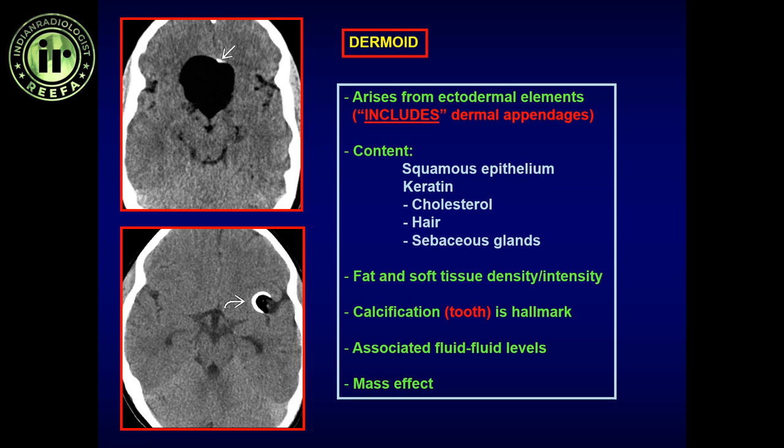Dermal appendages in dermoid include sebaceous and sweat glands and hair, producing sebum — which gives the characteristic appearance. There is a common misconception that there is fat inside dermoids. Adipose tissue is a mesodermal component, not ectodermal. Dermoid strictly has ectodermal origin. The contents — sebum, cholesterol, hair cells, sebaceous glands, keratin, squamous epithelium, and protein byproducts — give the T1 hyperintensity signal.